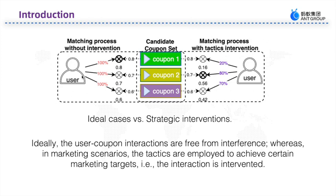Theoretically, unbiased data that is presumed to be gathered under a randomized allocation policy is ideal training data. However, in practice, acquiring unbiased data can be expensive and sometimes impracticable.